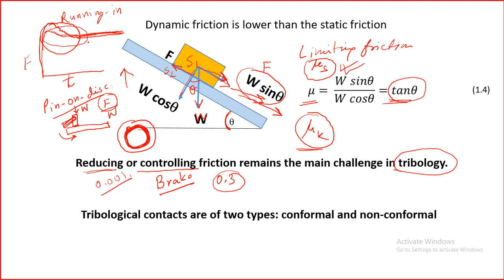Running-in happens even for lubricated contacts, not just dry contact. Even for lubricated contact, solid-to-solid contact still happens, so transfer of materials and smoothening of surfaces will occur. For example, initial roughness was something like this and after running-in the roughness has changed. The pin-on-disc machine is a more useful method than the inclined plane method; we will talk about that one in the lab.